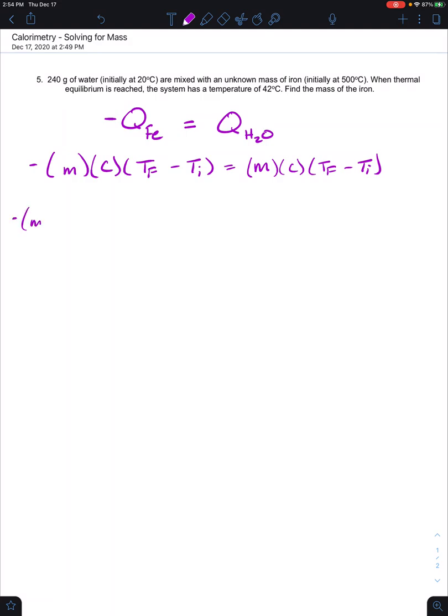We're going to keep it as negative M times the specific heat capacity of 0.444 joules over grams degrees Celsius times the final temperature of water. The system has a temperature of 42 degrees Celsius, which means water and iron make up the system. So they're both at 42 degrees Celsius as their final temperature, minus the initial temperature, which iron was initially at 500 degrees Celsius,